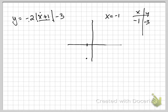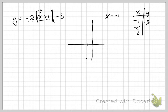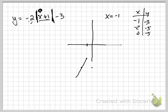If your vertex is at x equals negative 1, what two points could you plug into your x table? Negative 2 and 0 — one spot each direction. If I plug in negative 2: negative 2 plus 1 is negative 1, absolute value is 1, times negative 2 is negative 2, subtract 3 is negative 5. If I plug in 0: 0 plus 1 is 1, absolute value is 1, times negative 2 is negative 2, subtract 3 is negative 5. I have my graph.